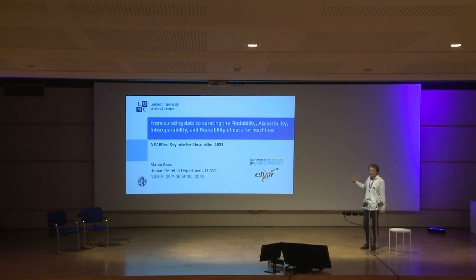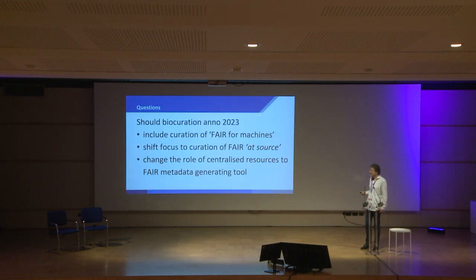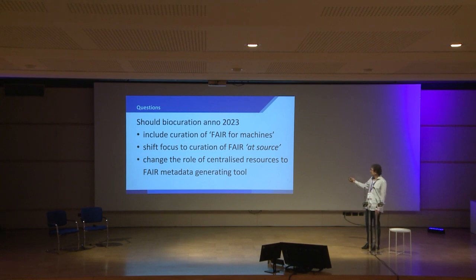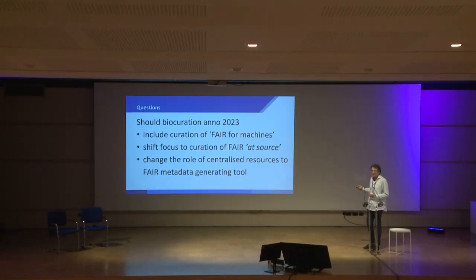What I am is what I call a fairy, and during the talk it will become clear why. To start with the end: the questions I've been asking myself when preparing this talk are — should curation include FAIR for machines? Should it just be part of curation? Should we shift the focus to curation of FAIR at source rather than big repositories that are FAIR? Should we do that at source and call that curation? And to change the role of centralized resources into FAIR-generating resources for the source, to actually bring it back to the source.